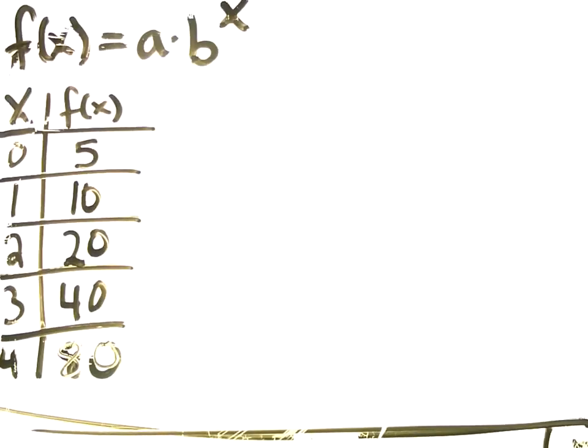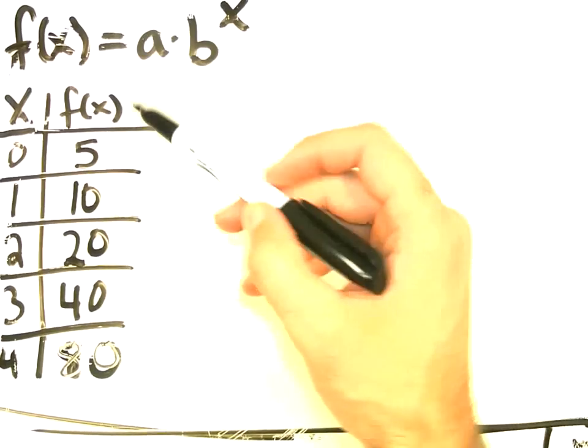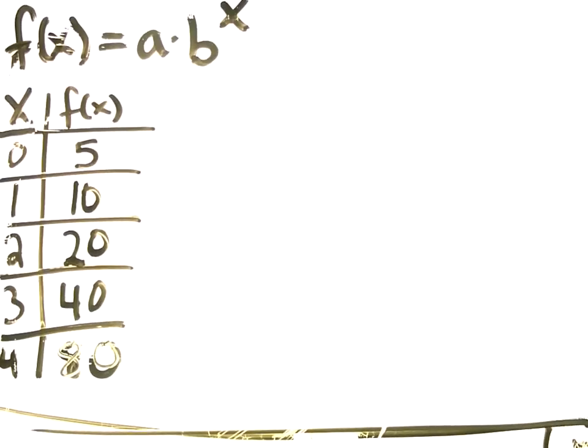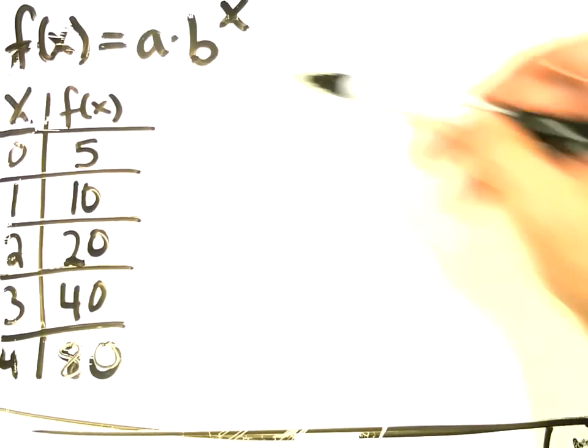This table here, along with this equation, it's an exponential equation. You'll be given something like this, and it'll say find the equation, or which of these five choices represents this data set.